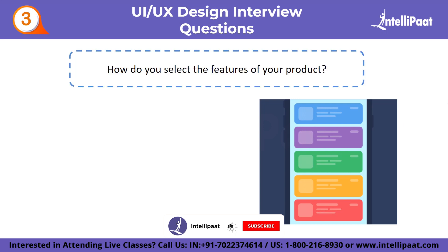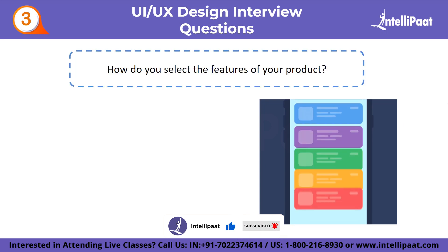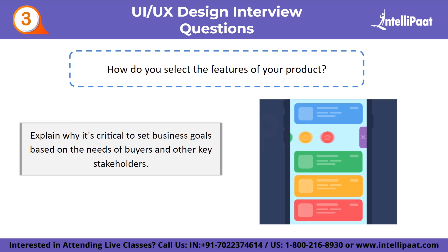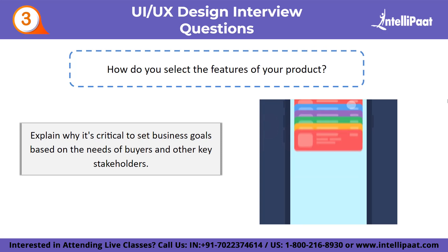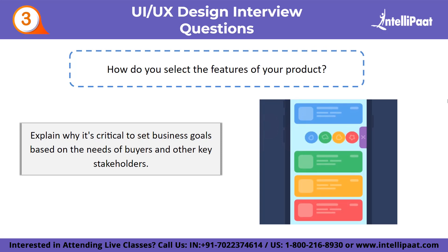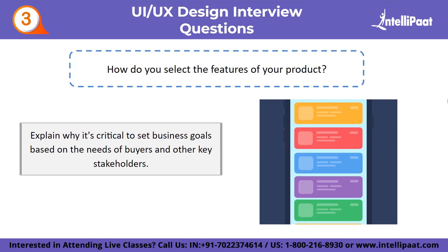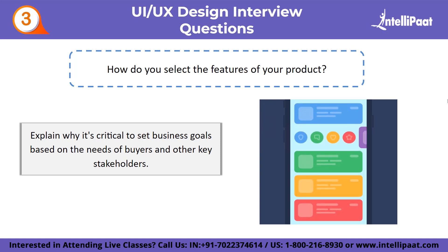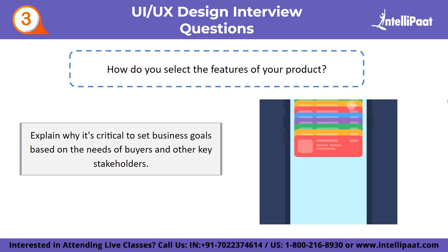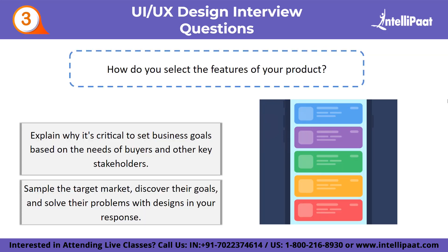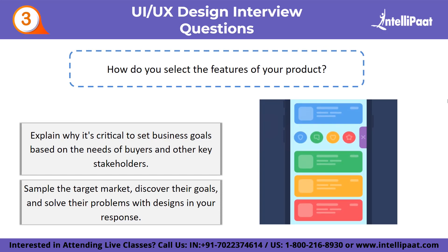Third question: how do you select the features for your product? Begin by explaining why it is critical to set business goals based on the needs of buyers and key stakeholders, then discuss why it's important to adjust to these goals as user needs change. Explain how you analyze user needs and ensure your UX design decisions align with them, and describe how you consider company goals when making design decisions, including how you sample the target market and solve their problems with your designs.